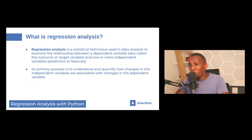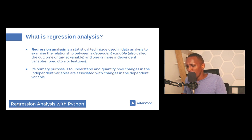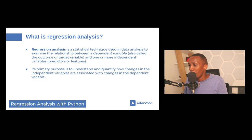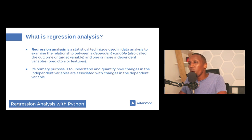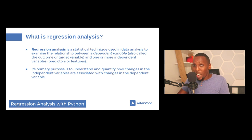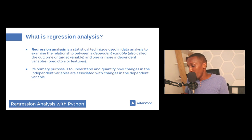The primary purpose of regression analysis is to understand and quantify how changes in the independent variables are associated with changes in the dependent variable. When working on prediction problems, the key distinction for regression is that the target variable must be numerical and continuous. For example, predicting tomorrow's temperature, student grades, SAT scores, or the price of a house — these are all continuous numerical variables suitable for regression analysis.